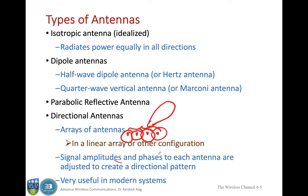In directional antenna arrays, the signal amplitudes and phases to each antenna are adjusted so that they create a directional pattern. These are very useful in modern systems where you want a very strong signal in one direction and want to minimize the effect of interference from other antennas.